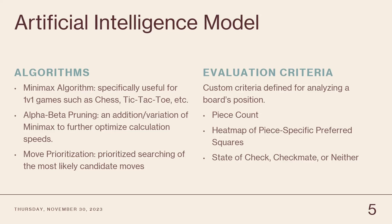We also have a custom evaluation criteria for analyzing a board's position, and the primary factors in this are piece count, a heat map of piece-specific preferred squares, and whether a given player is in check, checkmate, or neither.